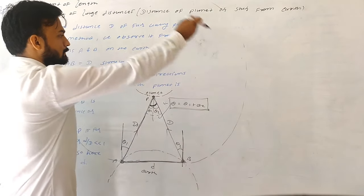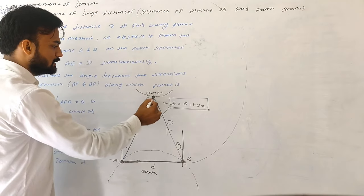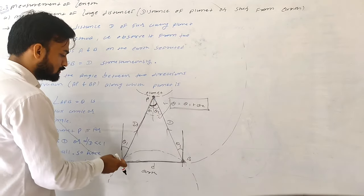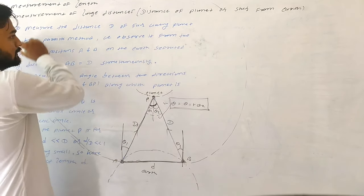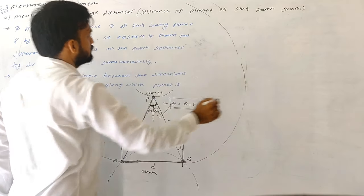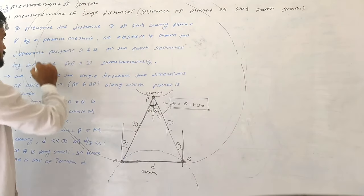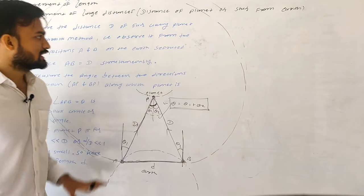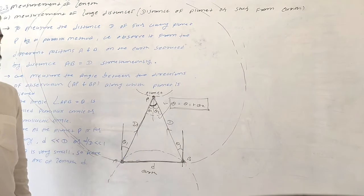Since small d is much much less than capital D — that is, d/D is much less than 1 — the parallax angle theta is very small. So AB, which equals small d, can be treated as the length of an arc of a circle with center P and radius capital D. When the angle is very small, this arc appears almost flat, like a straight line.